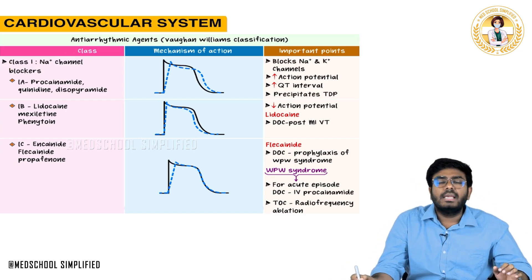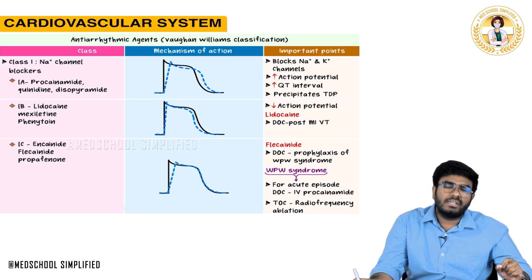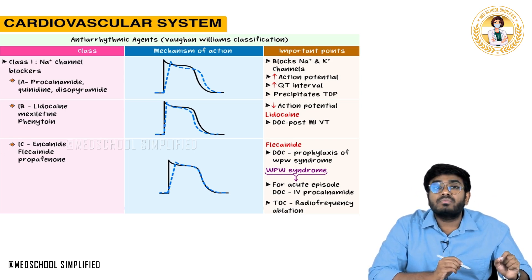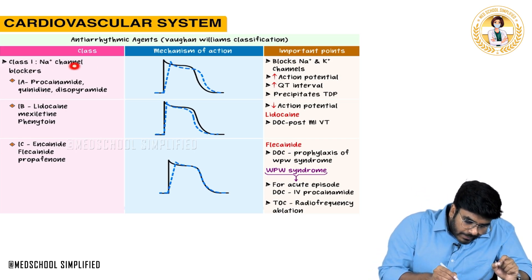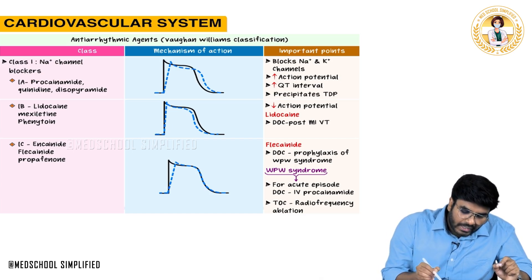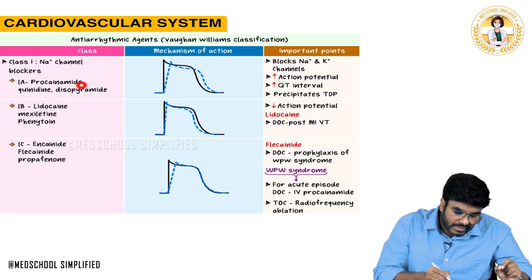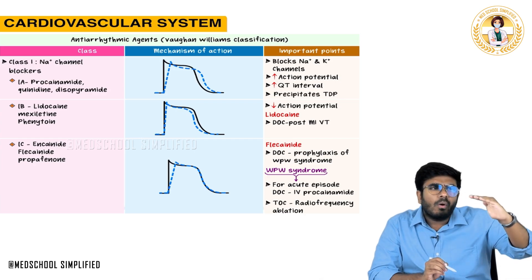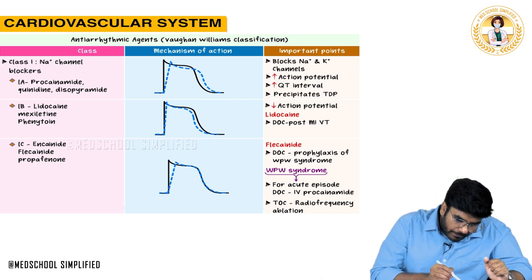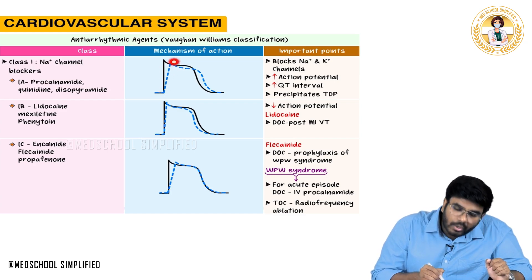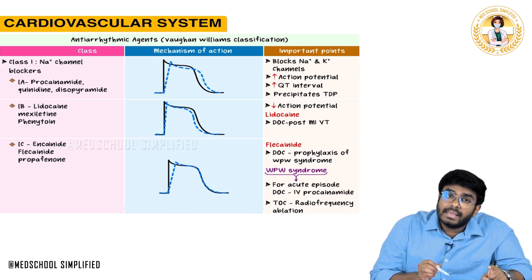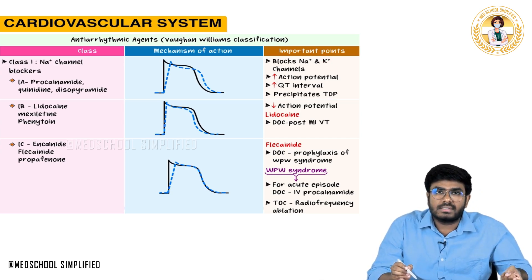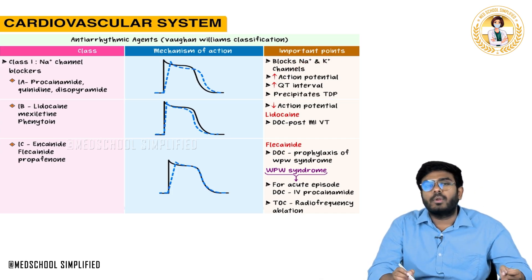Class 1 are sodium channel blockers, and they are further divided into subclasses: 1A, 1B, and 1C. Class 1A includes procainamide, quinidine, and disopyramide. Now, why subclasses? Class 1A drugs are not only sodium channel blockers — they are also potassium channel blockers.